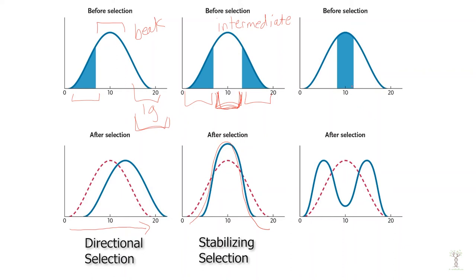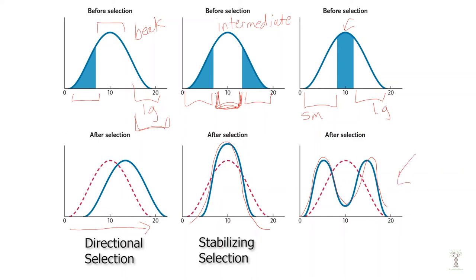In a third scenario, natural selection may favor either of the extremes. Perhaps the environment changes so that having a very small beak or a very large beak gives an advantage — maybe less competition for food — and then the intermediates are not favored. The population will then shift so that there are more organisms with the smaller beak and more organisms with the larger beak, but fewer organisms with the intermediate trait. This type of natural selection is called disruptive selection.